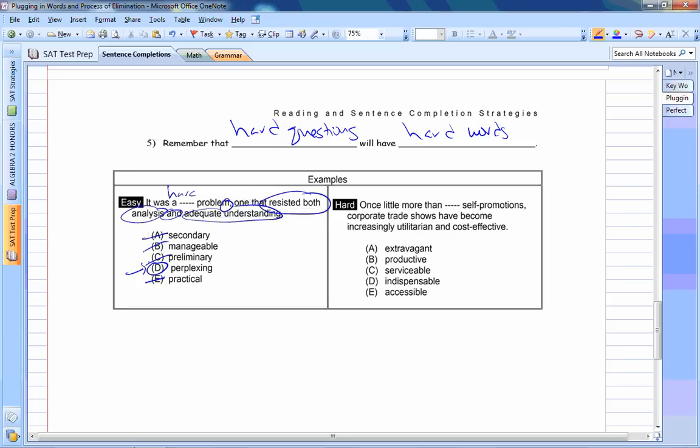Now here's a hard sentence completion. So we see another comma, but we see this word once. Once a little more than blanks, so from most corporate traditions have become increasingly utilitarian and cost effective. The word once is actually being used as a negative flow word. Because you're saying once there's this, but now there's something else. Even though you don't see the word but, we still know that we're trying to contrast.